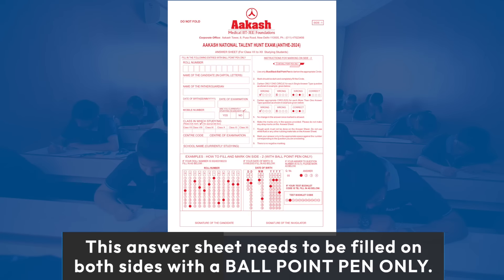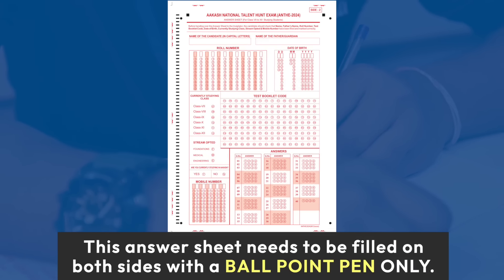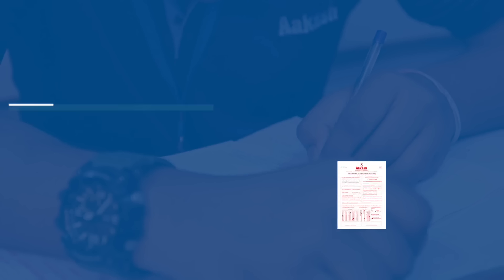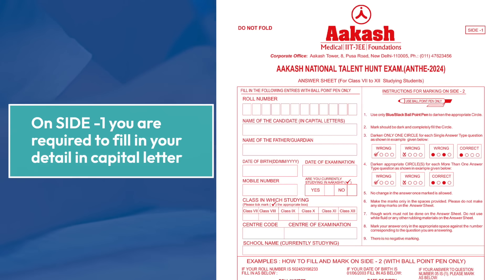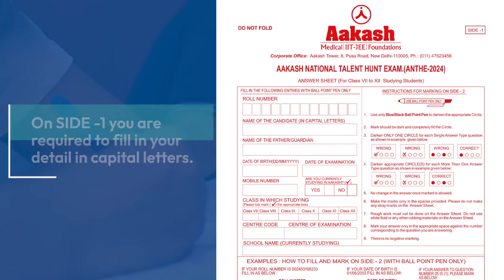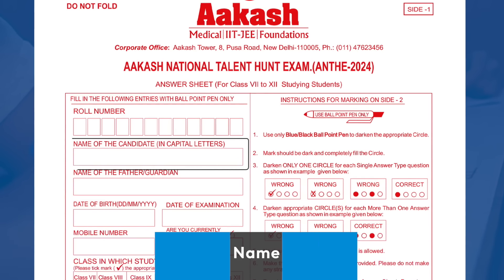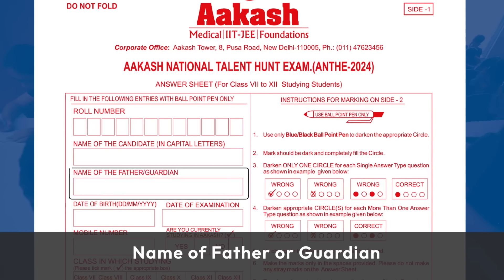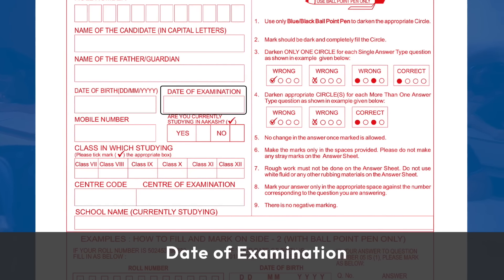This answer sheet needs to be filled on both sides with a ballpoint pen only. On side 1, you are required to fill in your details in capital letters. Fill in your roll number, name, name of father or guardian, and date of birth in DD/MM/YYYY format.